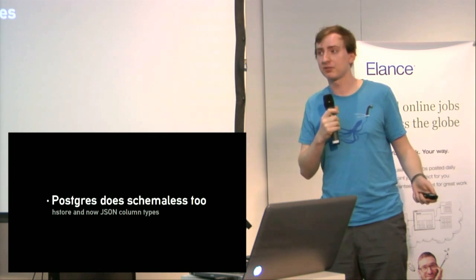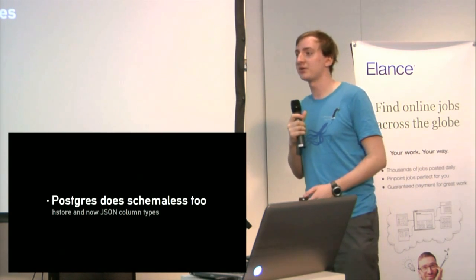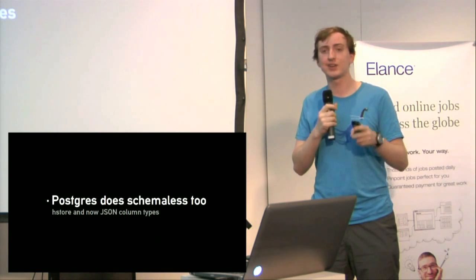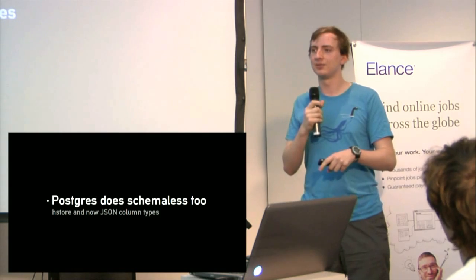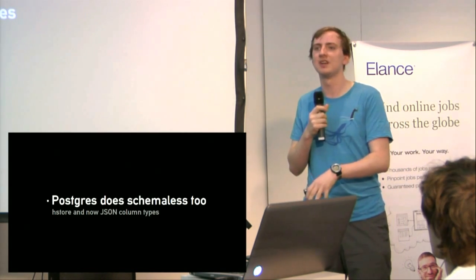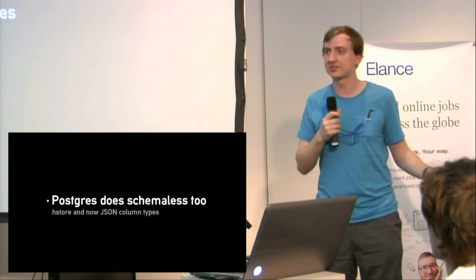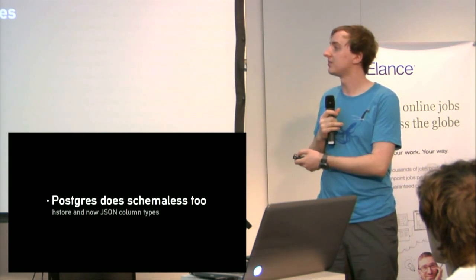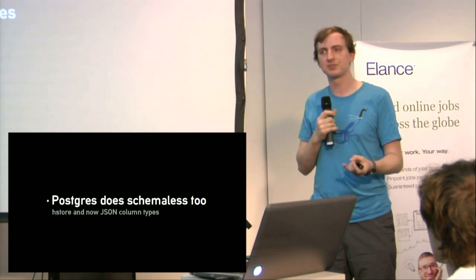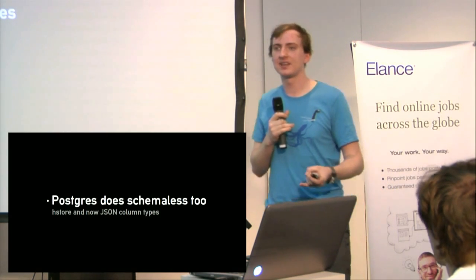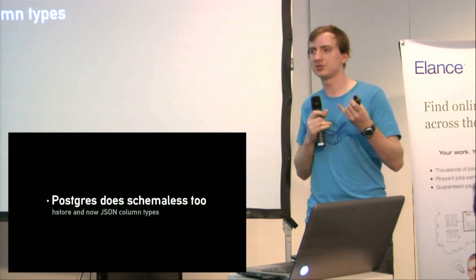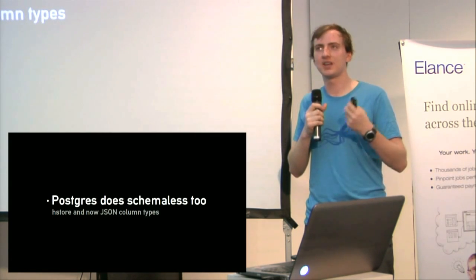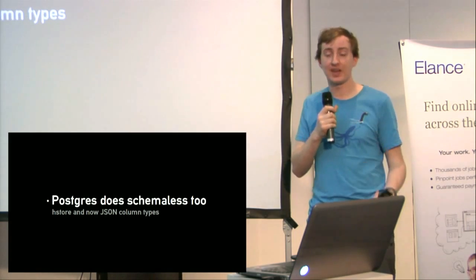Also worth noting is that Postgres does schemaless storage too. Postgres has HStore, a column type that is a key-value store — you can have rows with their own mini key-value stores inside them, and Postgres can query by key or by value. HStore is only strings, which is its current limitation. JSON is new in Postgres 9.2 — it validates JSON, lets you extract keys and values, and while indexing isn't brilliant yet you can make a stored procedure, index on it, and query on that, which is fast. So it's basically a mini schemaless type inside Postgres.